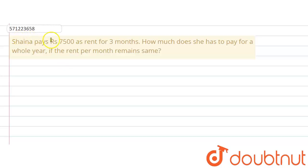The given question says that Shaina pays Rs. 7,500 as rent for 3 months. How much does she have to pay for a whole year if the rent per month remains the same? If the rent per month is the same, we are asked how much she will pay for the whole year if she is paying Rs. 7,500 for 3 months.